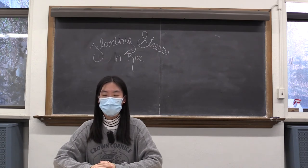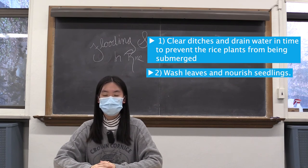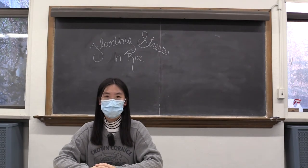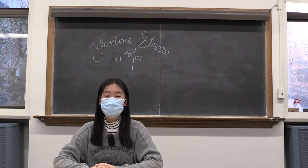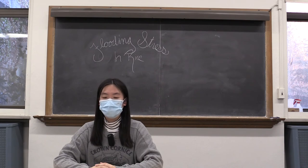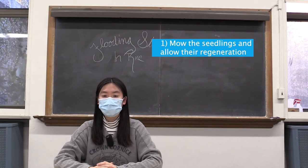Most frequently, there are three steps. First, clean the ditches and drain the water in time. Then wash the leaves and straighten the seedlings. Then apply top-dressing fertilization outside the roots. However, sometimes there is extreme flooding with a lot of rainfall for a long time. The river and groundwater levels are high, so it is hard to drain the water in time. In this situation, the plants need urgent rescue. After the rice is flooded, the ground is seriously damaged, the leaves are dead and rotten, and the growth of the young tillers is blocked. In this situation, they can mold the seedlings and allow them to regenerate.